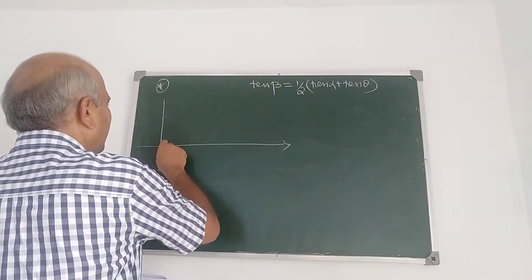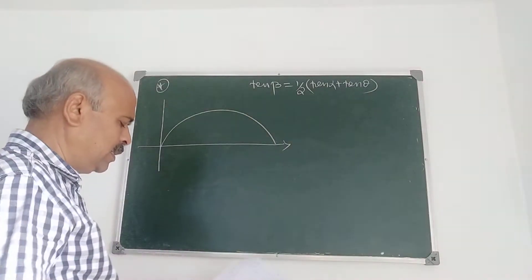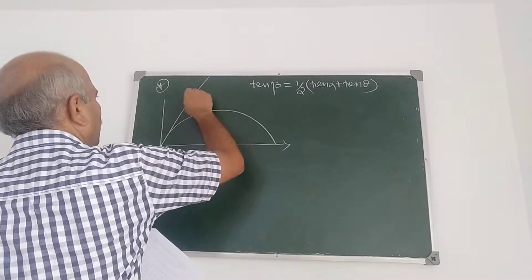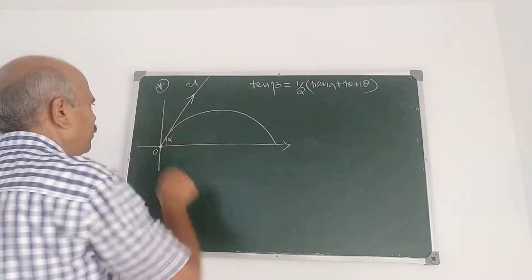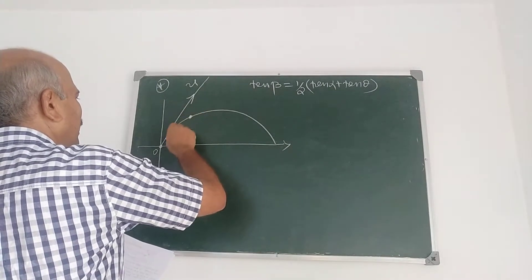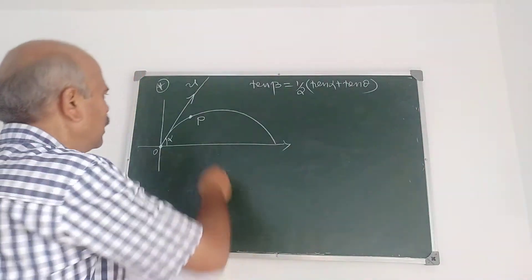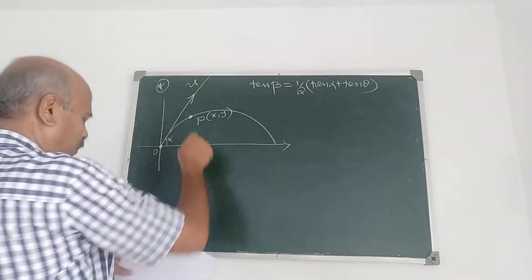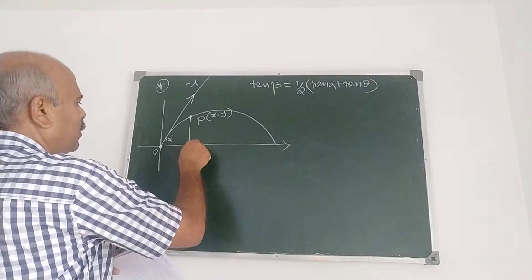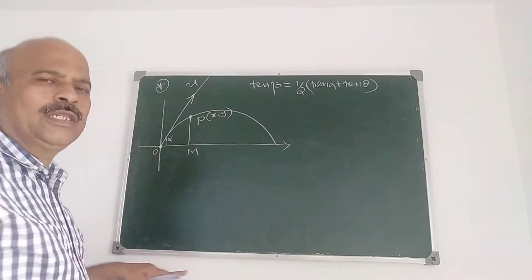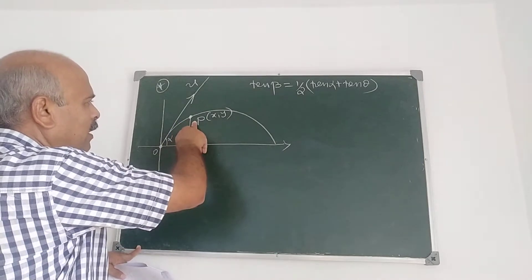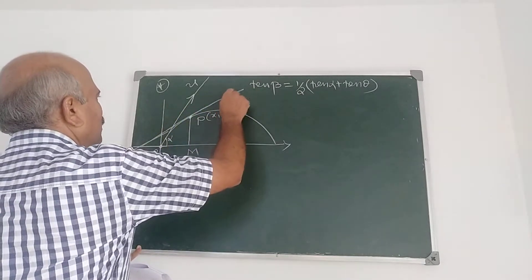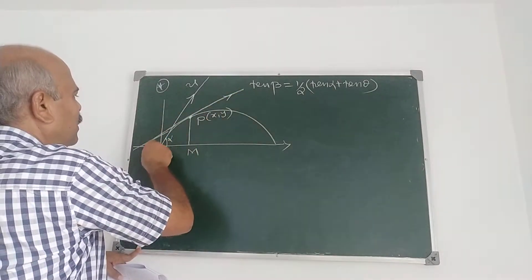Let me first explain the problem with a diagram. The particle is projected from point O with velocity u at angle α. After time t, the particle is at point P with coordinates (x, y). I draw a vertical here. At point P, the velocity makes an angle θ with the horizontal.